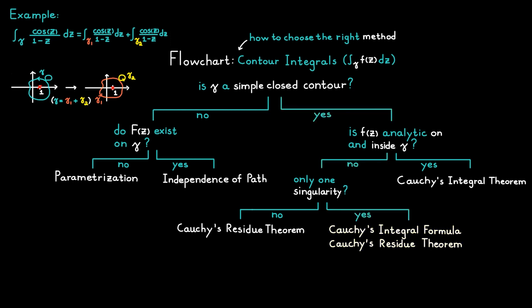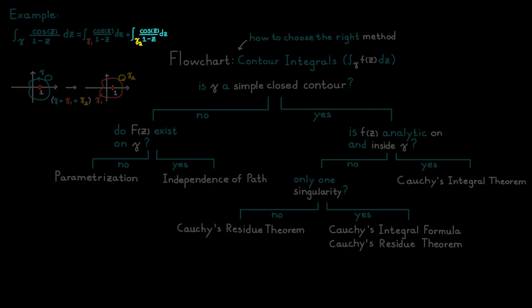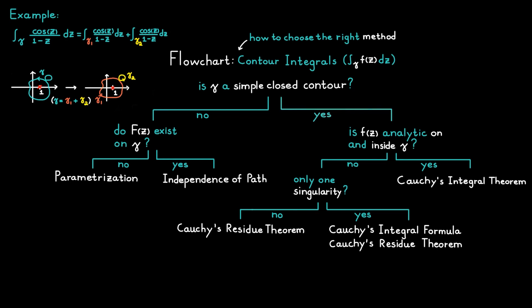For the second integral, contour gamma 2 is a simple closed contour and the function is analytic inside and on the contour since we don't have any singularities in this case. Therefore we can use Cauchy's integral theorem to solve this one.